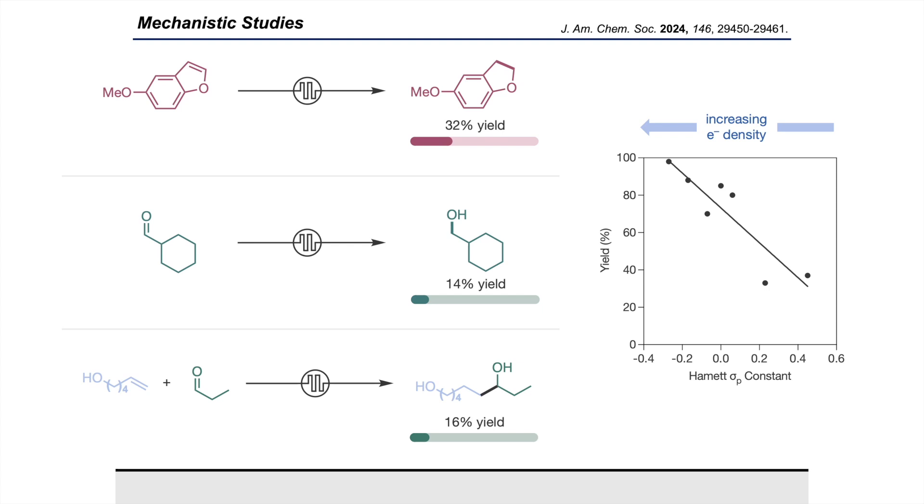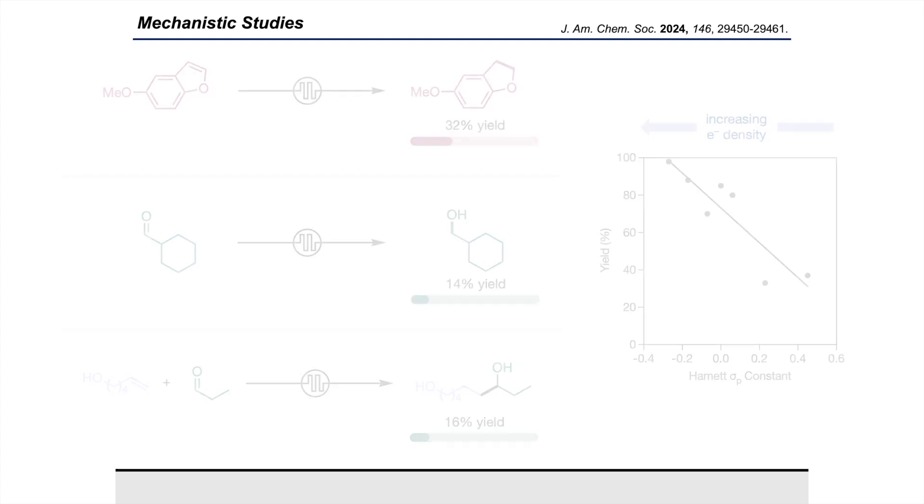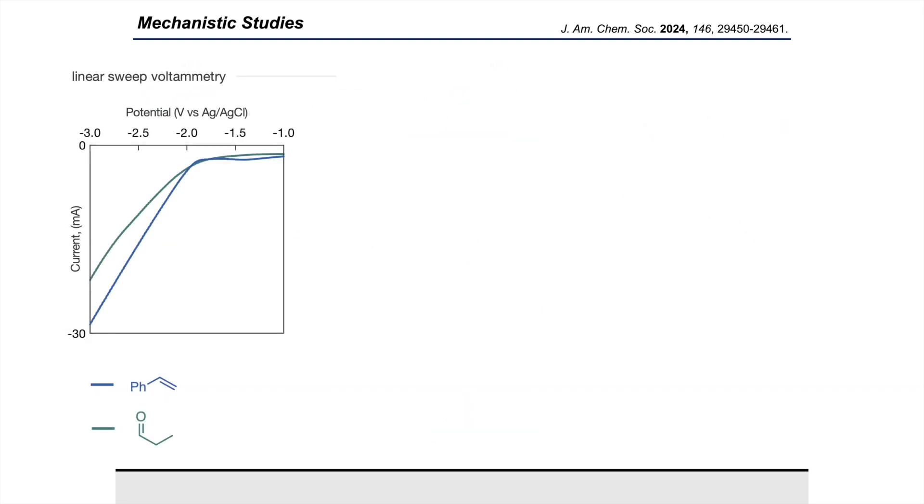Overall, these experimental studies revealed a substantial discrepancy in the efficiency of reduction between the two components. We already observed from the linear sweep voltammetry that the reductions of both components were thermodynamically competitive, and so we needed to provide an alternative explanation to explain this observed discrepancy. For that, we turned to more in-depth voltammetric studies.